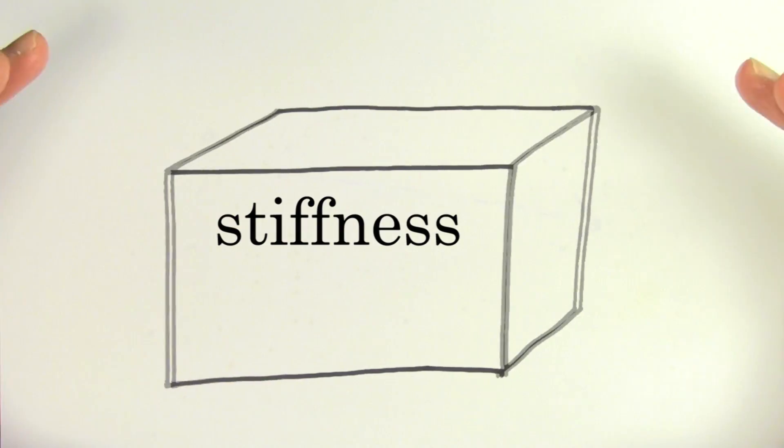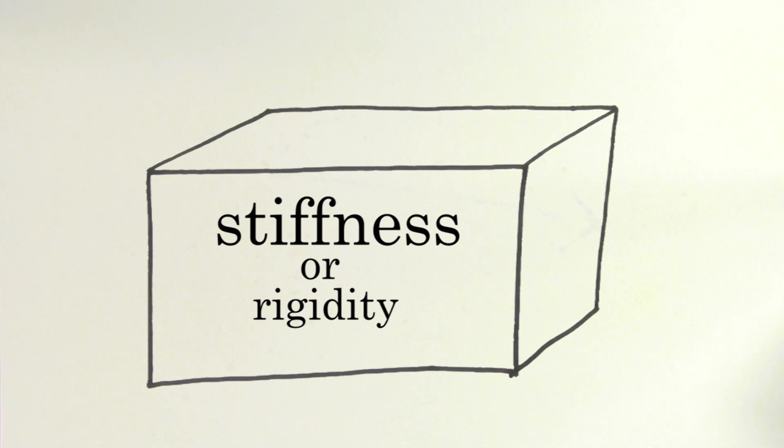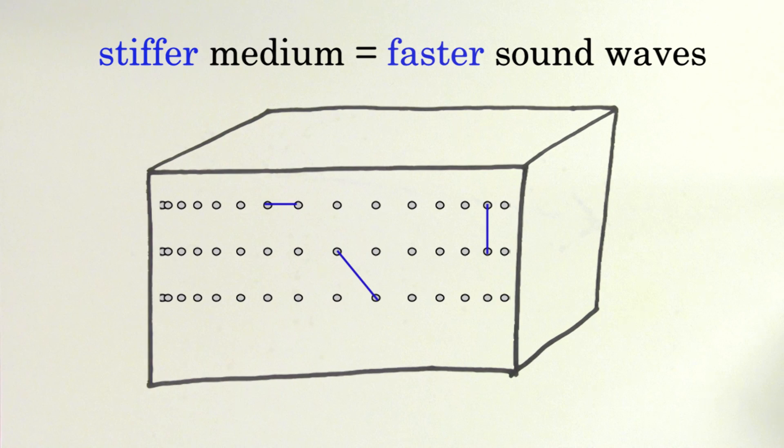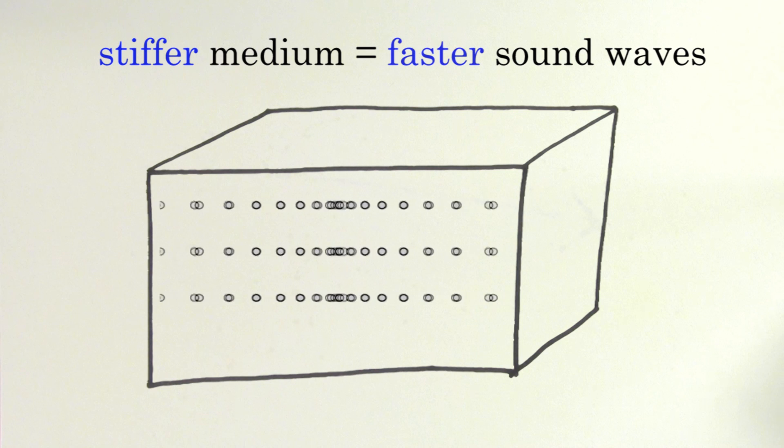One is the stiffness of the medium, or how rigid it is. The stiffer the medium, the faster the sound waves will travel through it. This is because in a stiff material, each molecule is more interconnected to the other molecules around it. So any disturbance gets transmitted faster down the line.